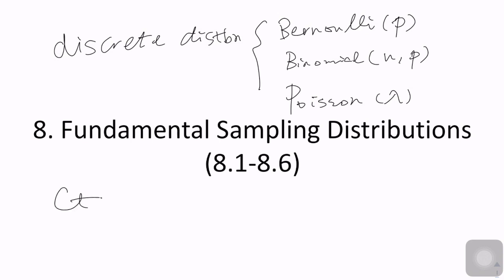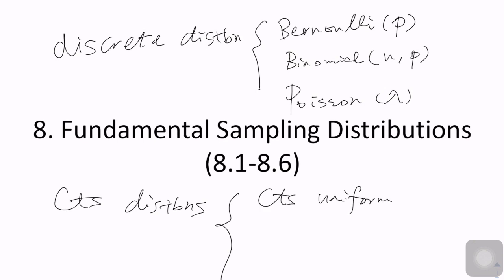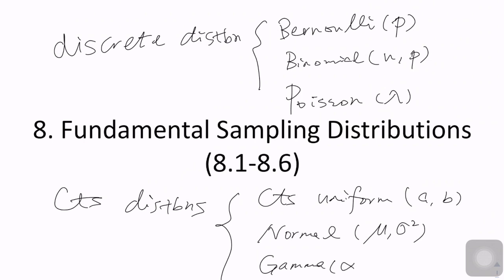In Chapter 6, we learned some continuous distributions. For example, the continuous uniform distribution with parameters a and b, normal distribution with parameters mu and sigma squared — where mu is the expectation and sigma squared is the variance — gamma distribution with parameters alpha and beta, and exponential distribution with only one parameter beta. Exponential distribution is actually a special case of the gamma distribution.